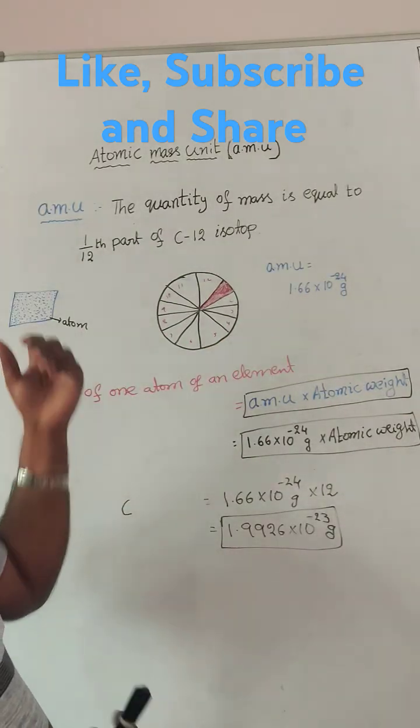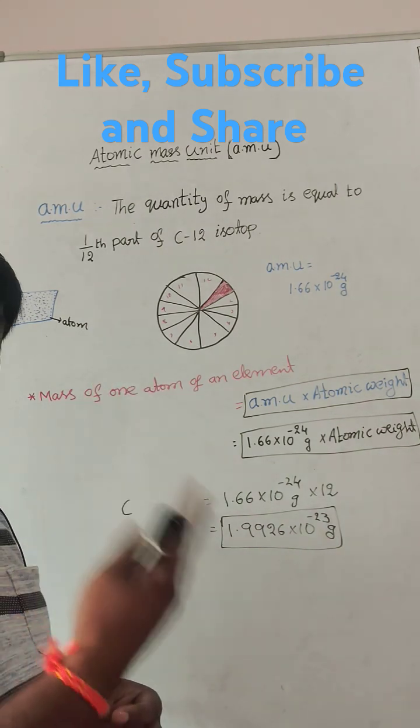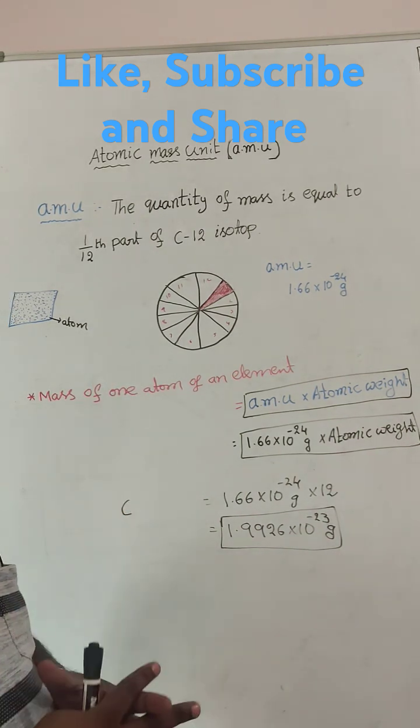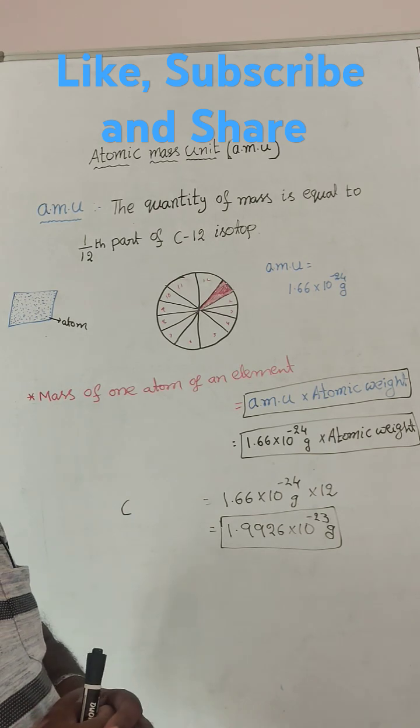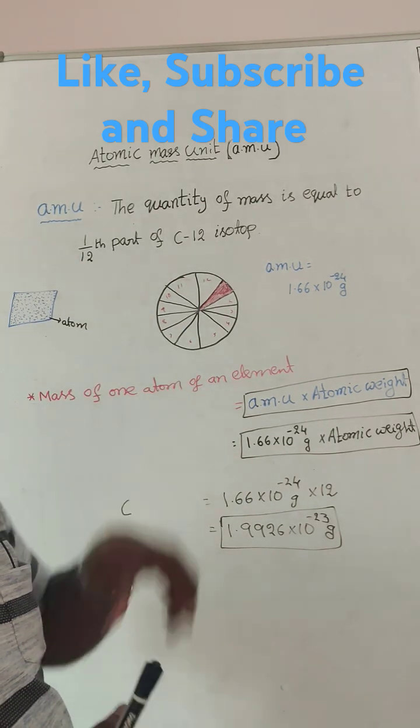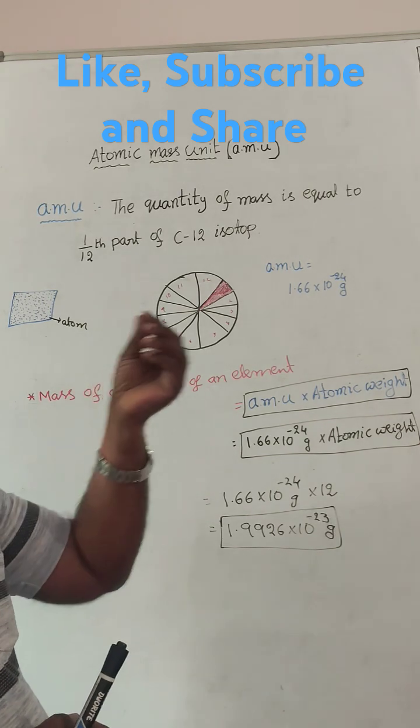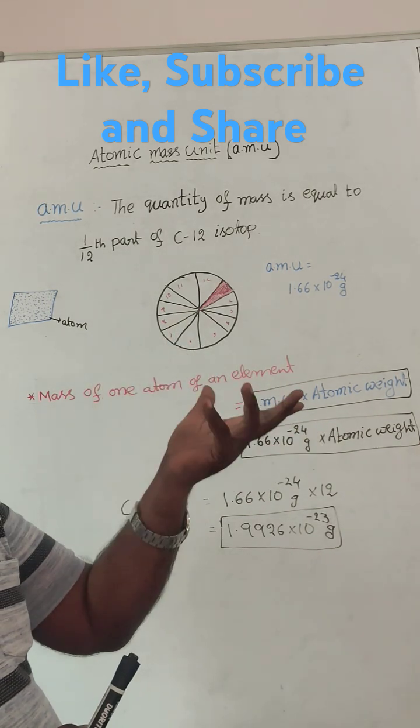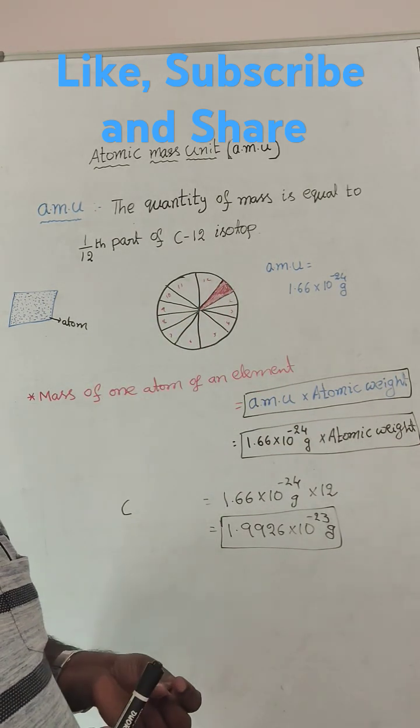For example, you take a carbon, I will take nitrogen. At the time, nitrogen mass number is 14. It contains 7 protons, 7 neutrons, divide into total 14 parts. At the time, that one by 14th part is nothing but AMU.